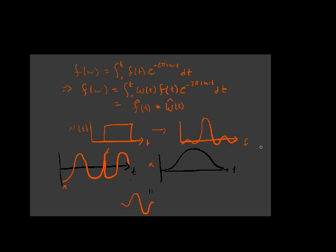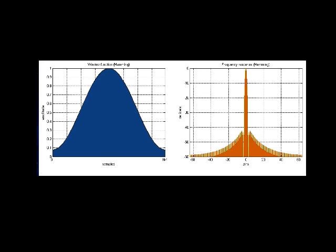There are many windowing functions you can choose from to do this. Two of the most popular ones include the Hamming window and the Hanning window. The Hamming window looks like this. On the left is the window in the time domain. On the right is the frequency response of the window.